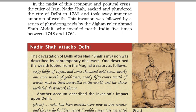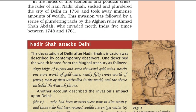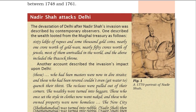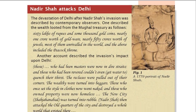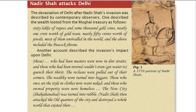Nadir Shah attacks Delhi. The devastation of Delhi after Nadir Shah's invasion was described by contemporary observers. One described the wealth looted from the Mughal treasury as follows: '60 lakhs of rupees and some thousand gold coins, nearly one crore worth of gold, nearly 50 crores worth of jewels — most of them unrivaled in the world — and the above included the Peacock Throne.' Another account described the invasion's impact upon Delhi.